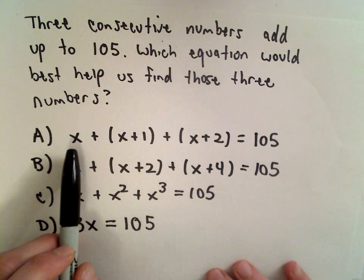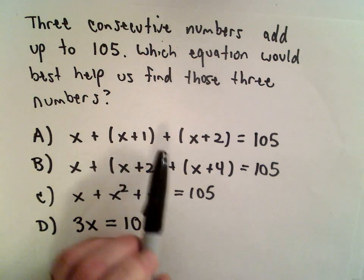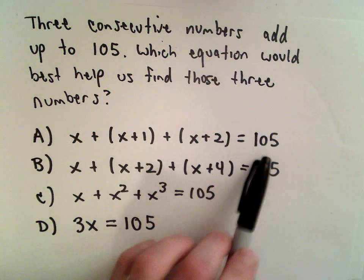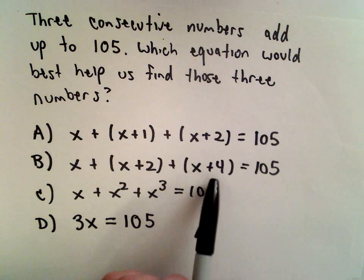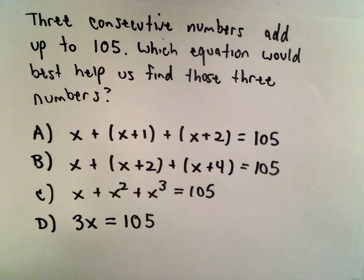Answer choice A says we have x plus the quantity x plus 1 plus the quantity x plus 2 equals 105. B says we have x plus the quantity x plus 2 plus the quantity x plus 4 equals 105.